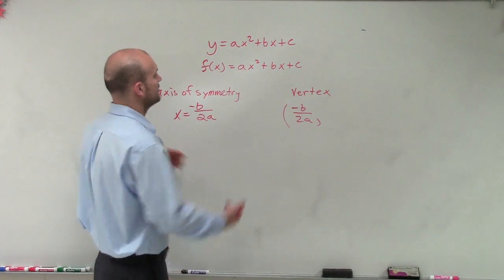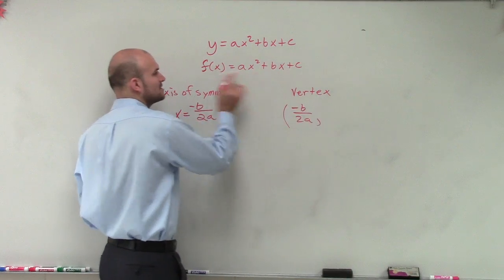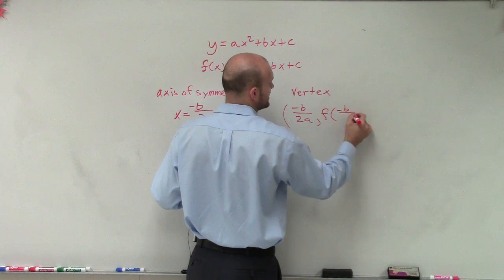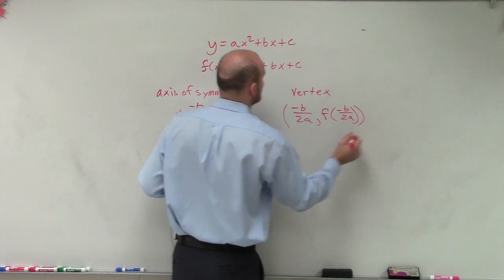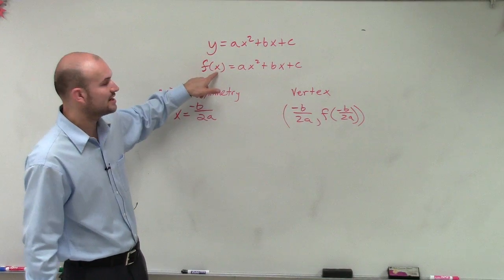Well, we're going to do the exact same thing. So we're going to plug this in for our x and then find the y. So I'm going to represent that by using function notation of f of negative b divided by 2a. So remember, when you evaluate for a function,